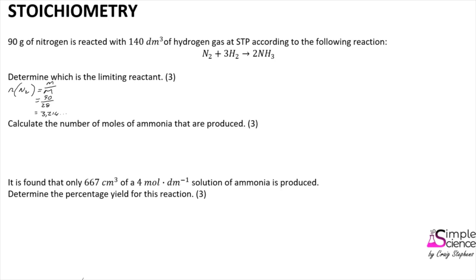There is a volume of hydrogen given as a gas and it is at STP, which tells us we can calculate the number of moles of hydrogen gas using the molar gas constant, which states that one mole of any gas at the same temperature and pressure occupies the same space. That is 140 cubic decimetres divided by the molar gas constant of 22.4, giving us 6.25 moles of hydrogen.